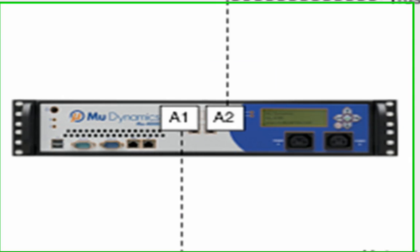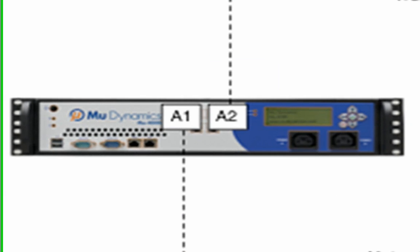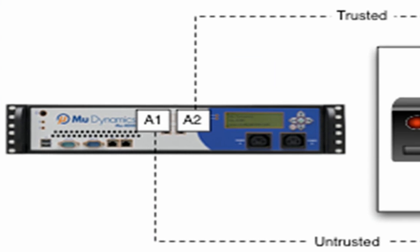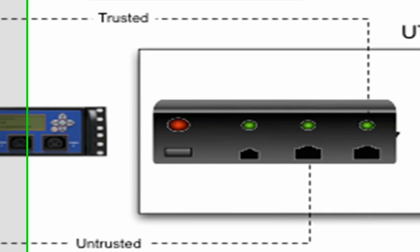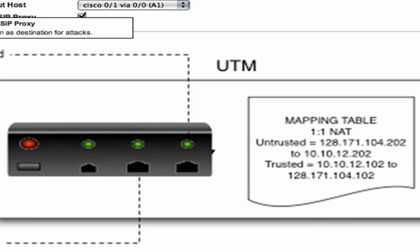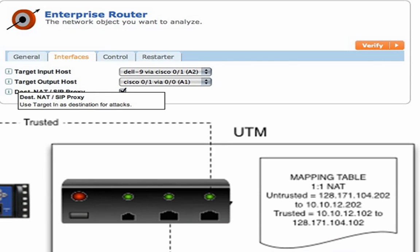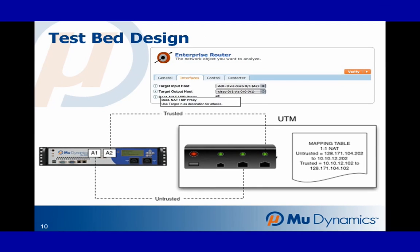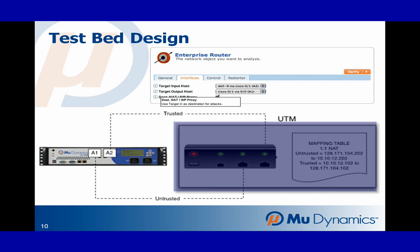The operator uses two of the MU Analyzer's analysis ports to connect to both the trusted and non-trusted sides of the target. Transparent devices, routed environments including destination NAT, and IPv6 interfaces are supported in the testbed design. The device under analysis can be reconfigured between analysis runs to see how configuration changes affect the outcome of the test.